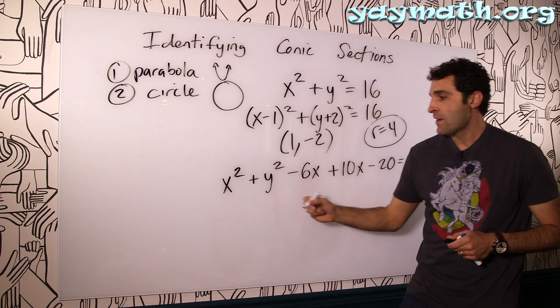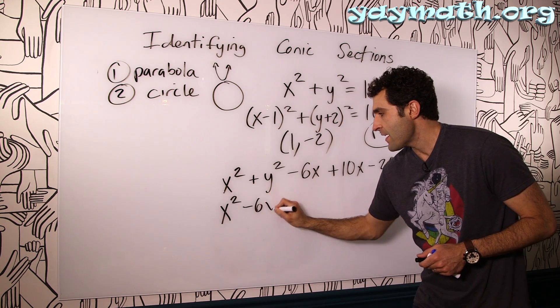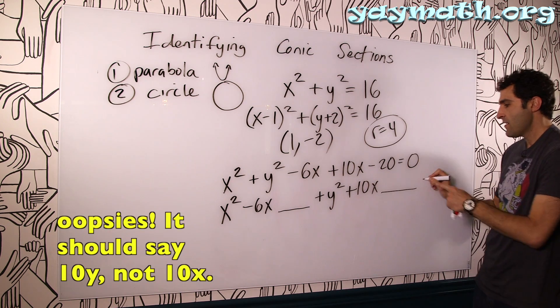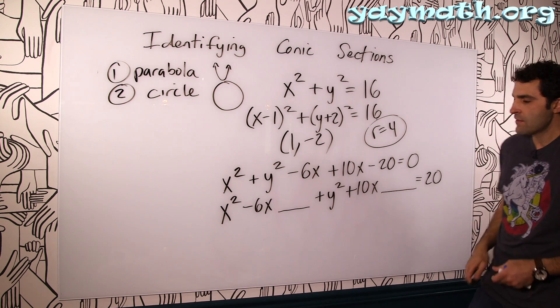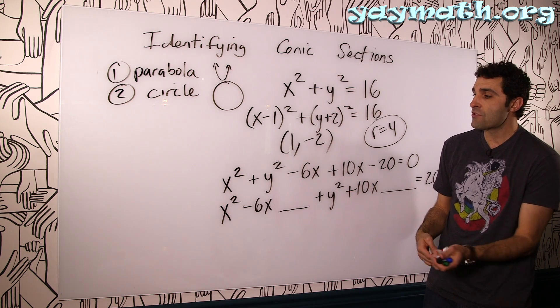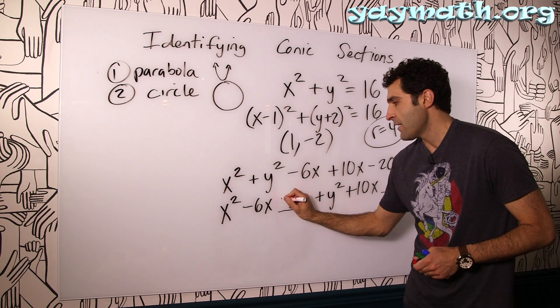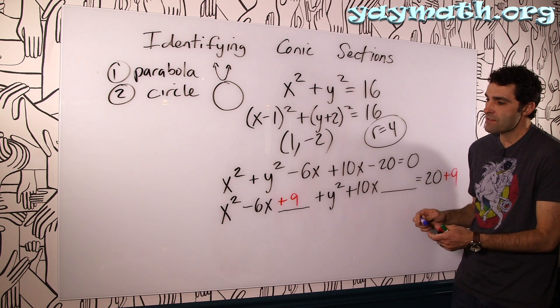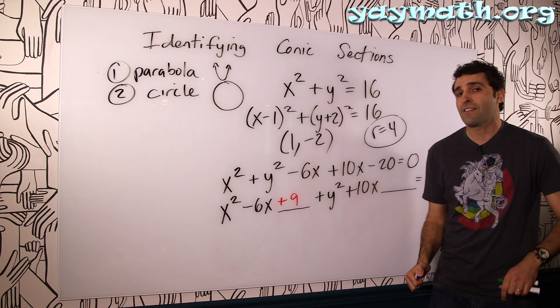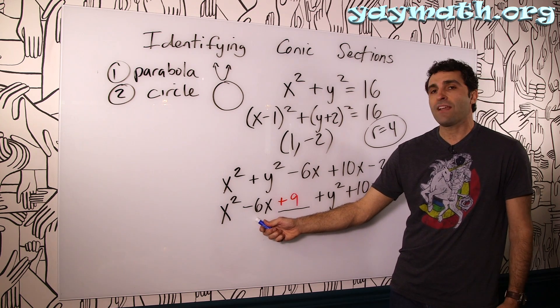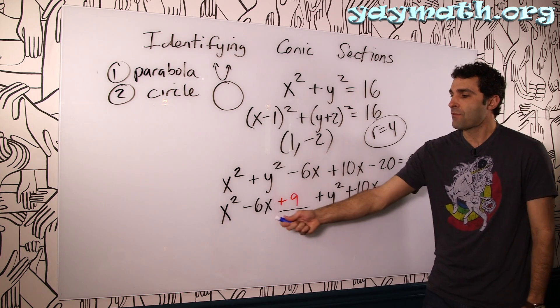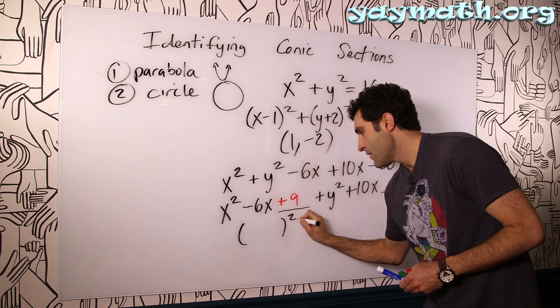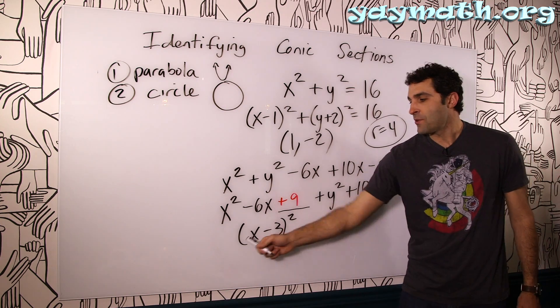So you'll notice no coefficients out here. So that's the giveaway that this is immediately a circle. We want to make it look like this. So again, we're going to do a little completing the square party. So let's group our x's. We got x squared. We got minus 6x. Leave a space. We got our plus y squared plus 10x. Leave a space. Add 20 to both sides. So it's going to be equal to 20. So let's complete the square here. Numbers that add to negative 6 and multiply to blah. So those two numbers must be negative 3, negative 3. So this would be a plus 9. So I'm going to add 9 here. And I'm going to add 9 here.